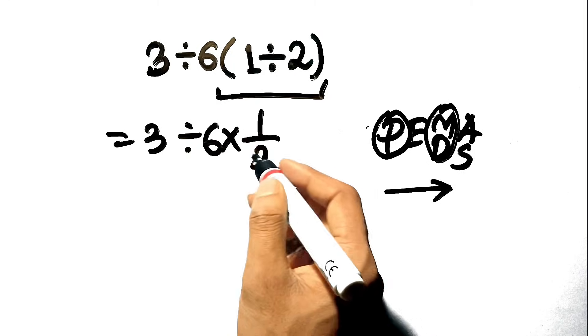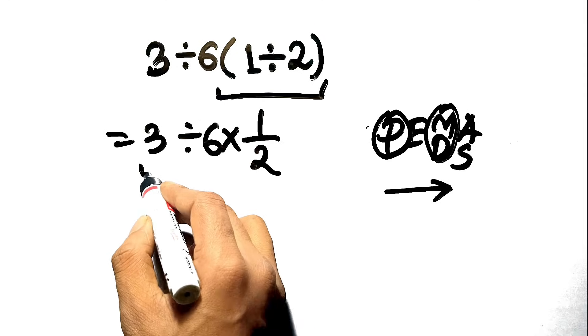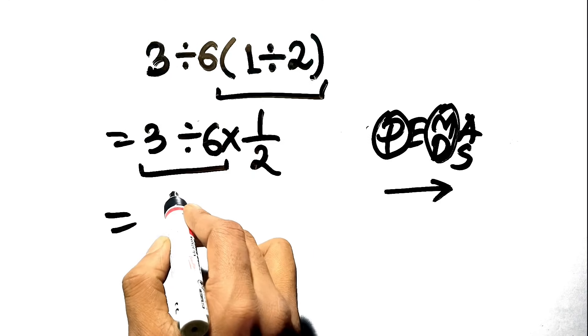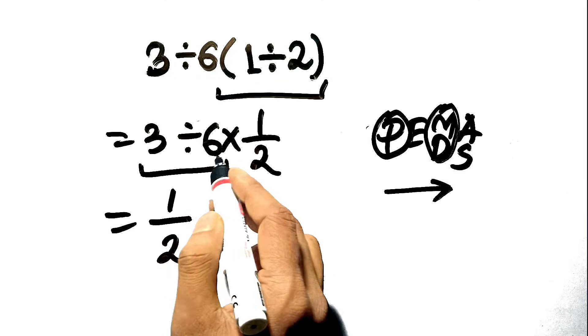Now we apply the left to right rule. The first operation from the left is the division, 3 divided by 6. That simplifies to 3 sixths, which is 1 half, or 0.5.